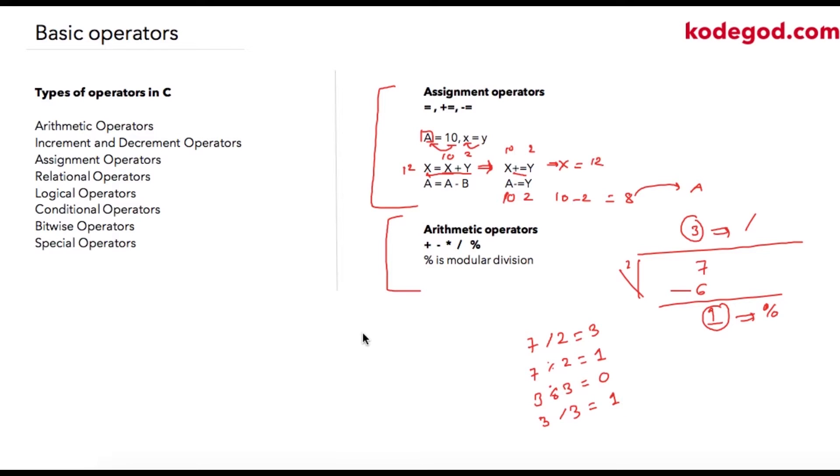I'm taking another example. Let's say 17 divided by 15. So output of this will be 1. And 17 modular division 15. In this case, my output will be 2.